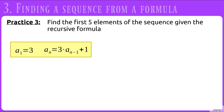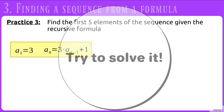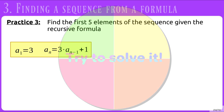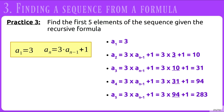Finally, we'll try with multiplication and addition. Find the first 5 terms when the first term is 3 and every term after that is 3 times the previous term plus 1. You should have gotten the sequence 3, 10, 31, 94, and 283.